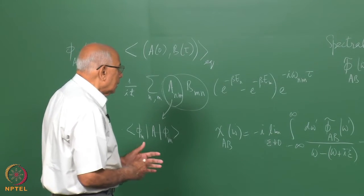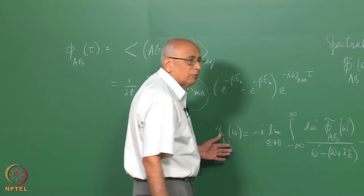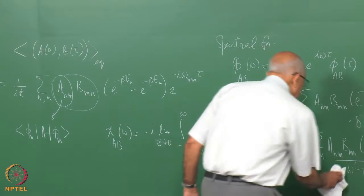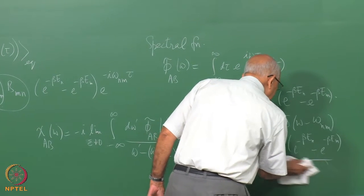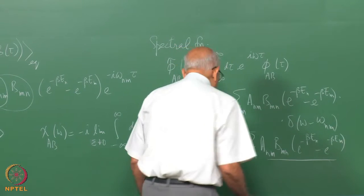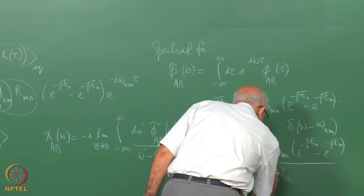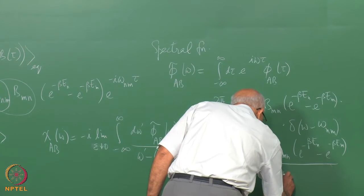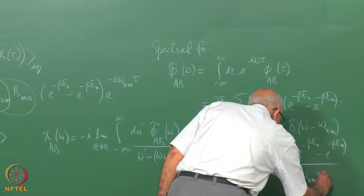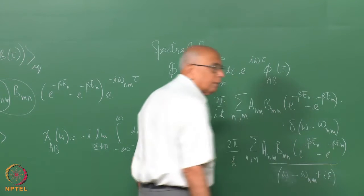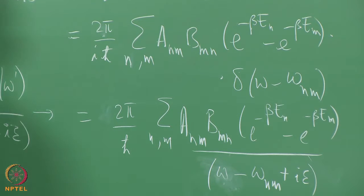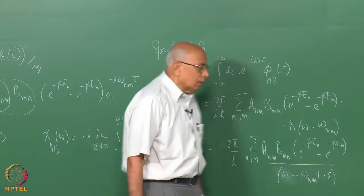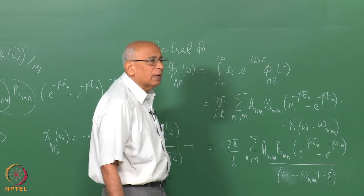The first question is: what kind of function is χ as a function of ω? The susceptibility has poles at all the transition frequencies ω_{nm}, and this representation tells you explicitly what kind of analytic function it is. It is a function of ω which is analytic in the upper half plane. The physical susceptibility for real frequencies is the boundary value from above, because as ε→0⁺ you give a small positive imaginary part and let it go to zero.